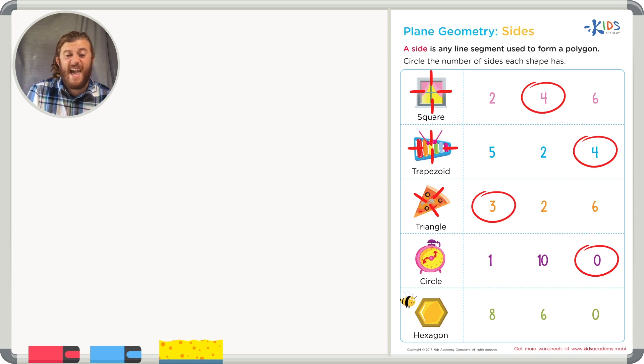Our last shape is a hexagon. Let's draw ourselves a hexagon. In my hexagon, there are one, two, three, four, five, six sides.